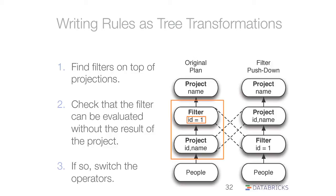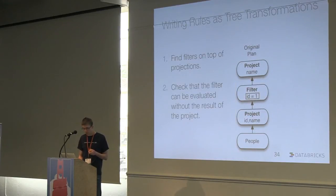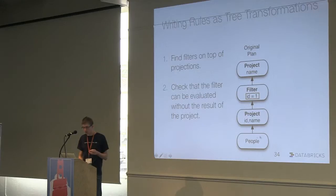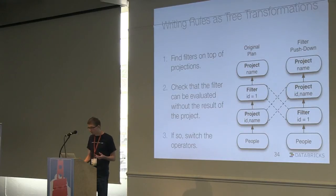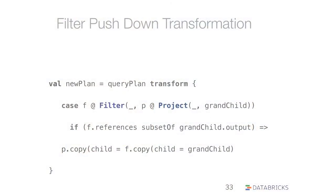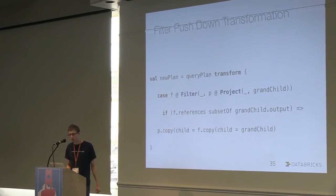As an example, let's look at the filter pushdown rule. We said: look for filters that sit on top of project operators and see if we can push them down. We want to check that you can evaluate the filter on the table that's underneath without the result of the project — if we don't create new fields in the project. If so, we want to switch the operators and move the project on top. In the code, queryPlan.transform takes a partial function. We pattern match: if there's a filter F whose child is a project with some grandchild — meaning a filter above a project — and if the filter only references fields already in the grandchild and not new fields introduced by the project, then it's okay to push it down.